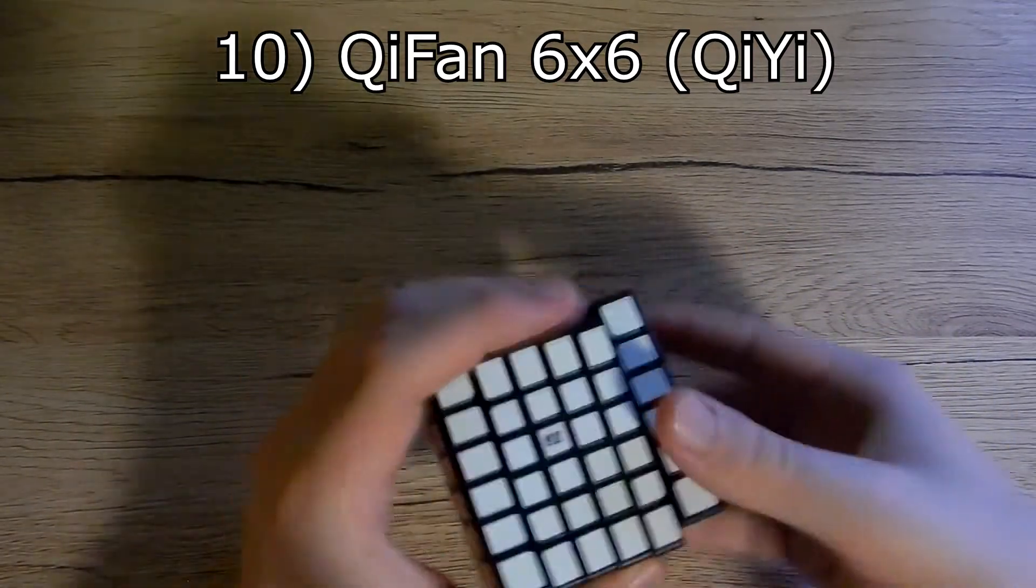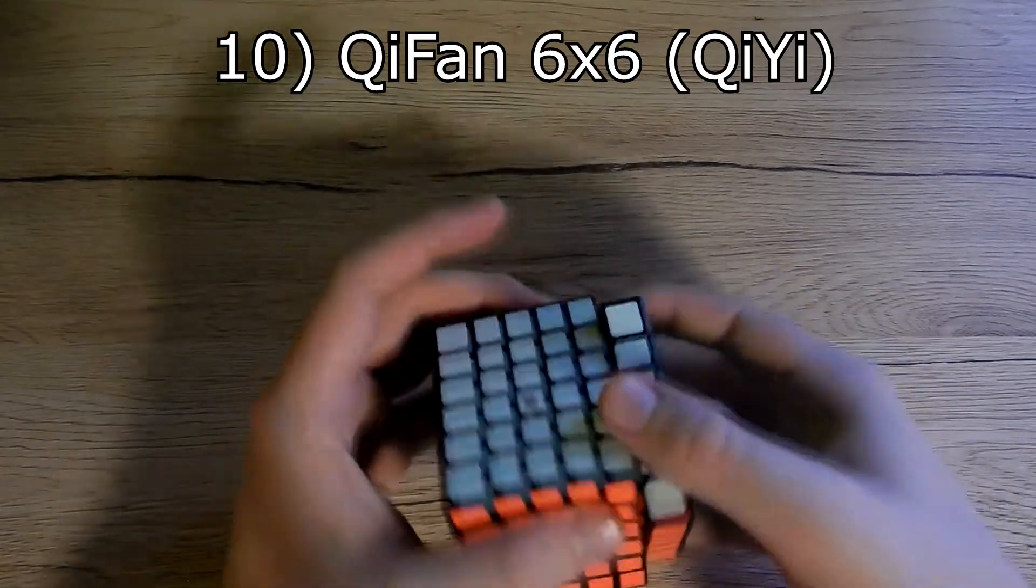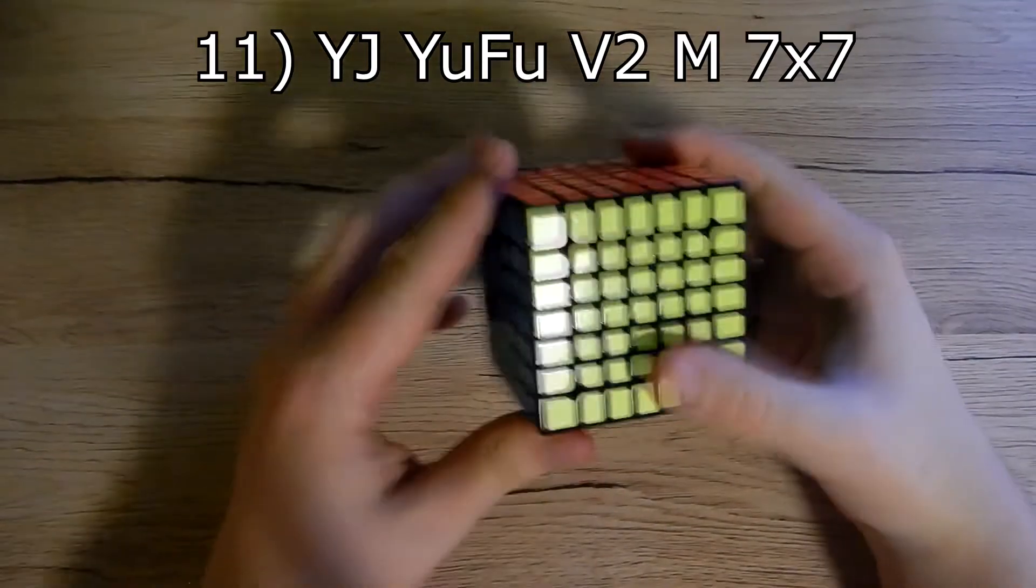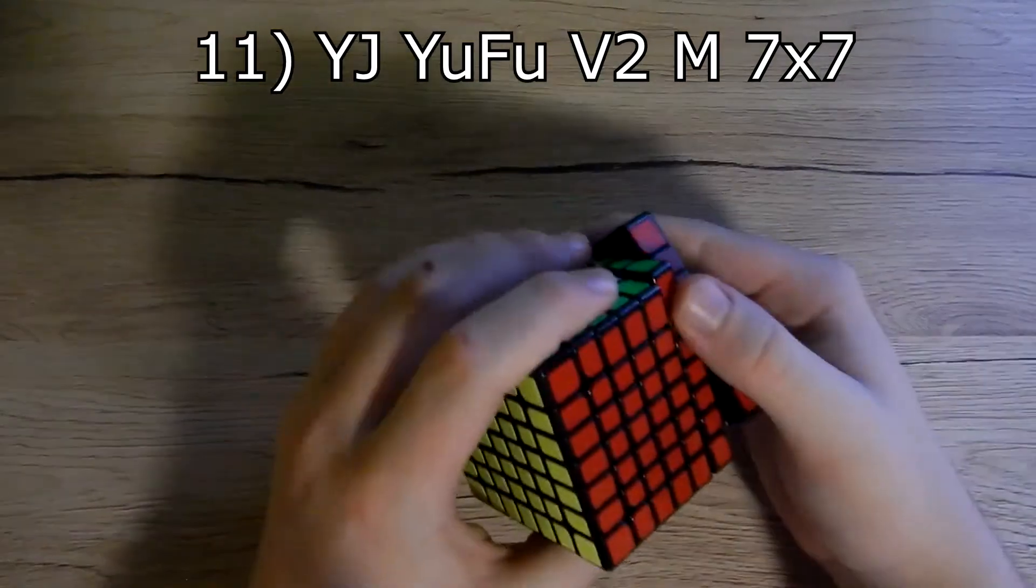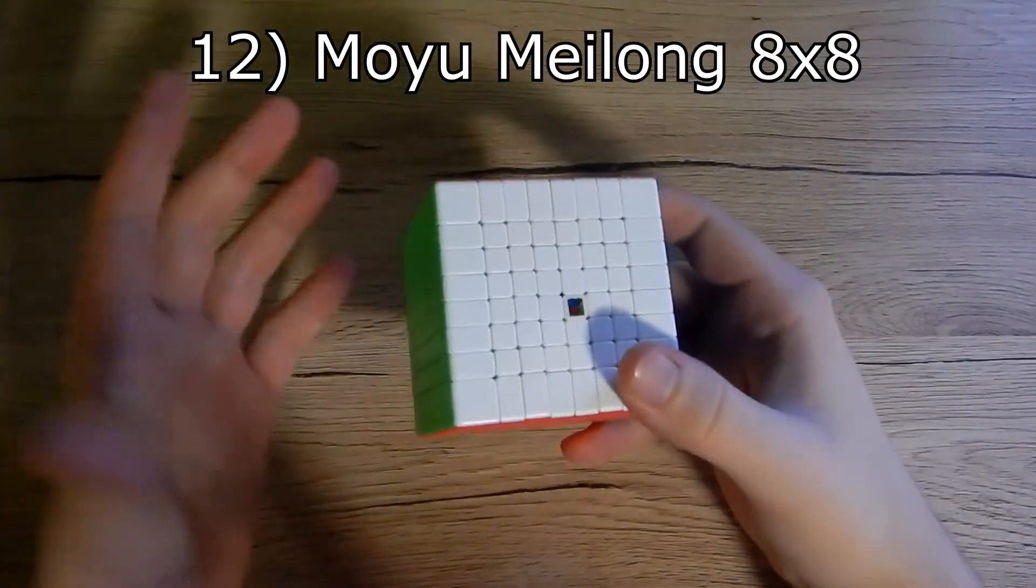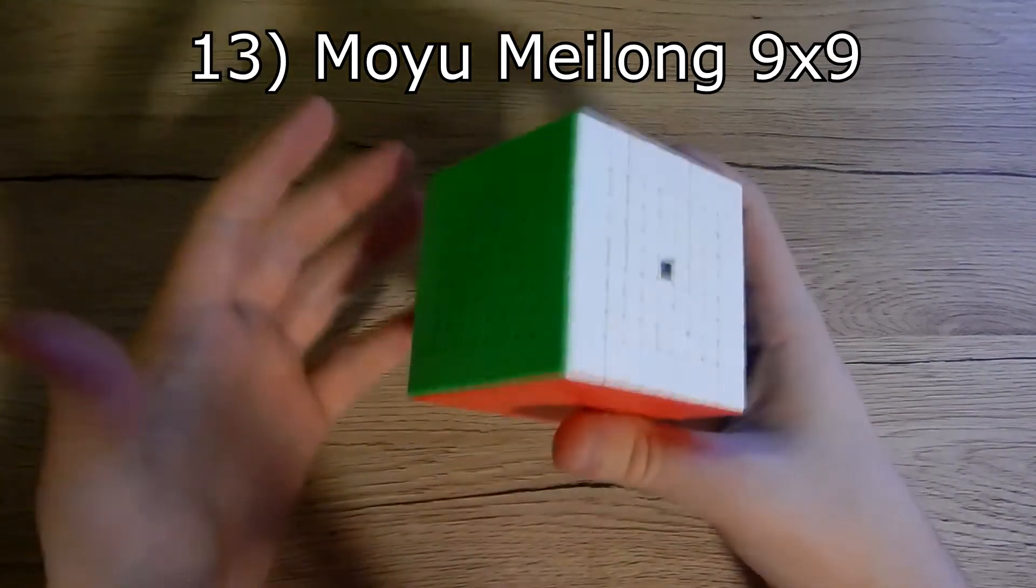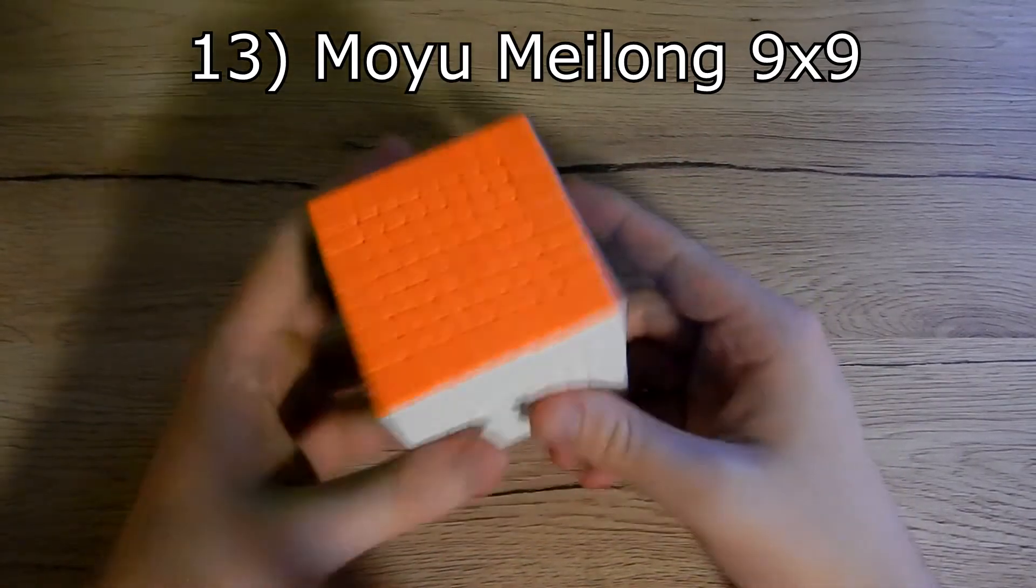It has smooth turning. It's not great for speed solving, but I'm not speed solving so I'm okay with it. Next we have 7x7 which is YJ UFU V2M. It has magnets. This is the Moyu Meilong 8x8. This is the Moyu Meilong 9x9, and this is the biggest cube I have.